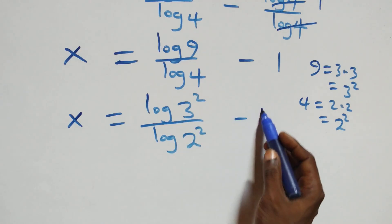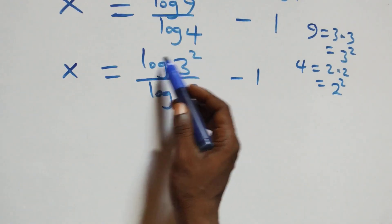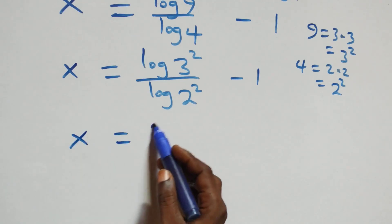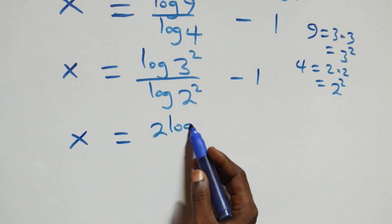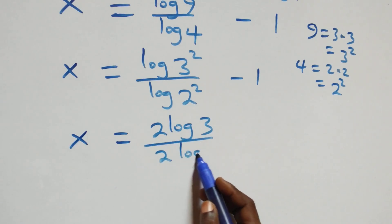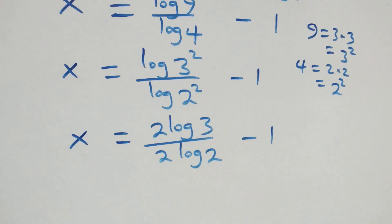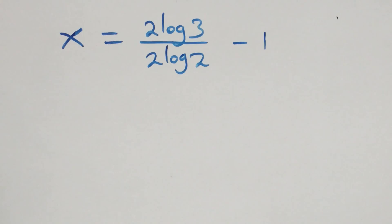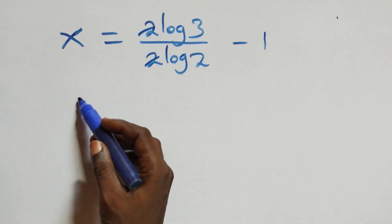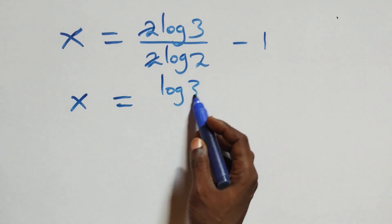We apply the power rule of logarithms, bringing the 2s out front, giving x equals 2 log 3 over 2 log 2 minus 1. The 2s cancel each other, and we are left with x equals log 3 over log 2 minus 1.